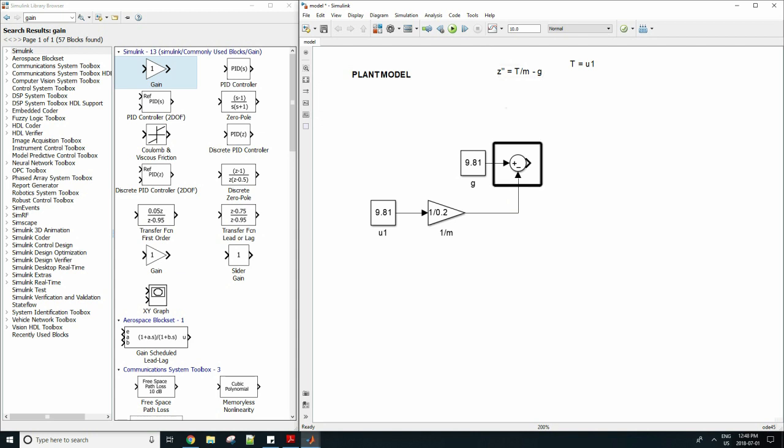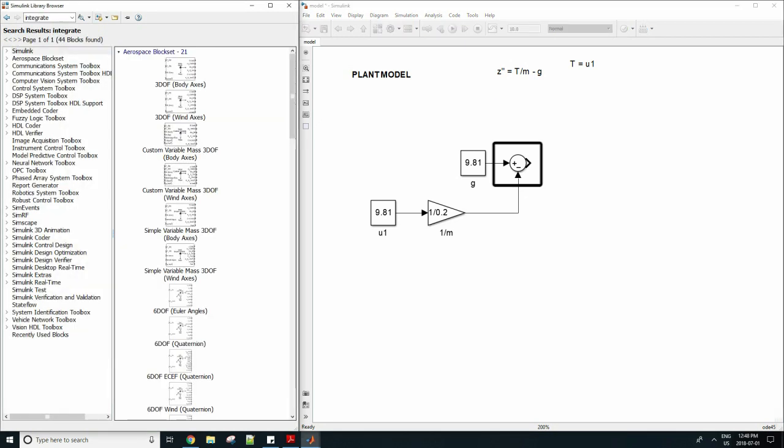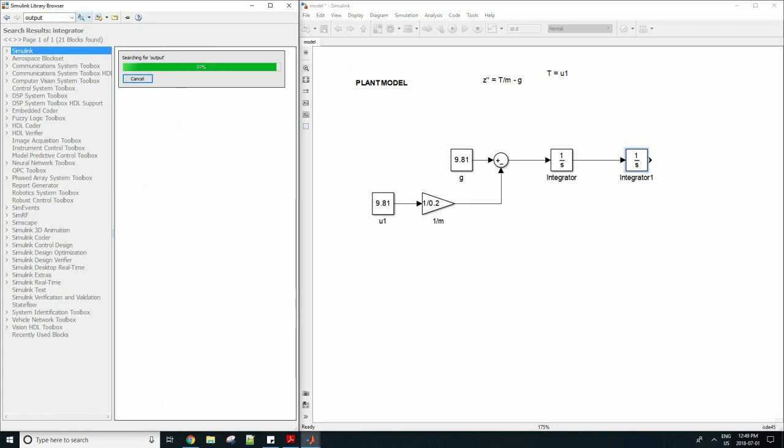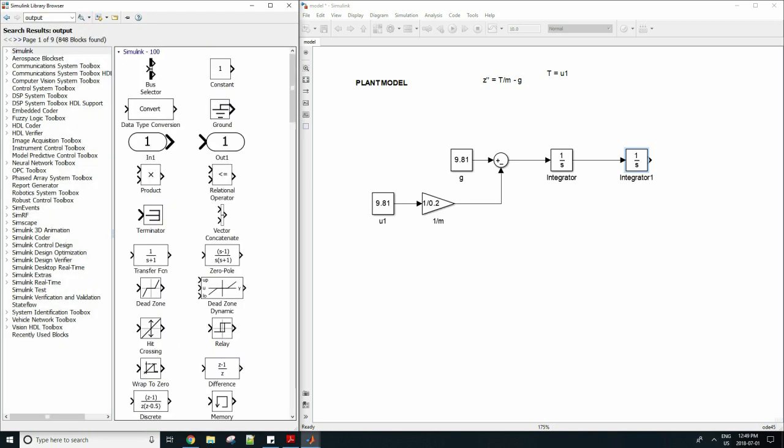So type in integrator in Simulink browser and drag in two blocks to create a double integration. So we can now obtain z from our z double dot and we can create an output block to represent z because we need to have it feed back into our system.